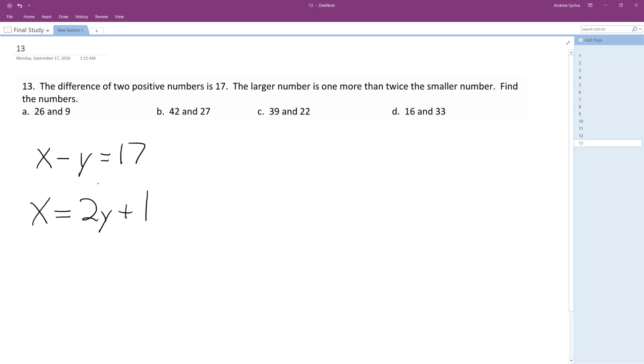All right, so we'll just use substitution here. We'll substitute the second equation into the first. So 2Y plus 1 minus Y equals 17. So we get Y plus 1 equals 17. Minus 1, so Y is equal to 16.